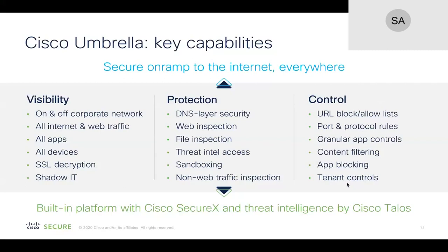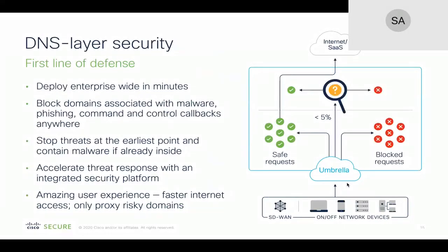With threat intelligence at your fingertips, you can dive deeper into why blocks occur or why something was not blocked, since internet threats are constantly evolving. The third pillar is control — blocking based on domains, URLs, ports and protocols, specific applications, content categorization, and even tenant control. For example, if you use Office 365 or G Suite, you can restrict access to only corporate-sanctioned tenants. Everything going to the internet is seen and policy can be enforced, backed by threat intelligence from Talos.